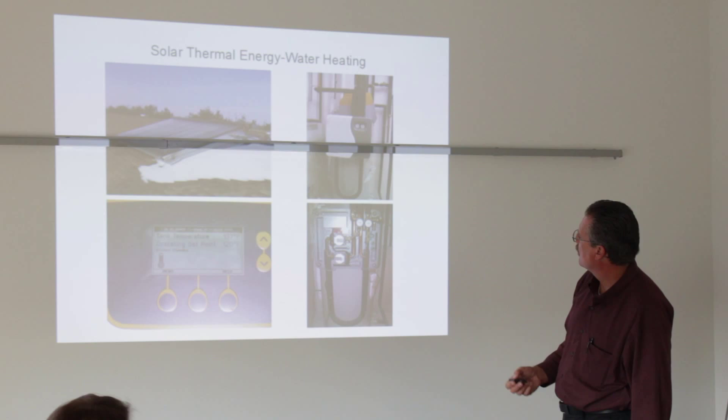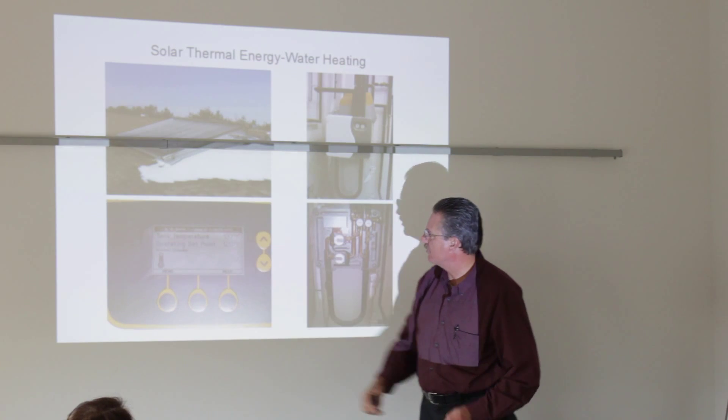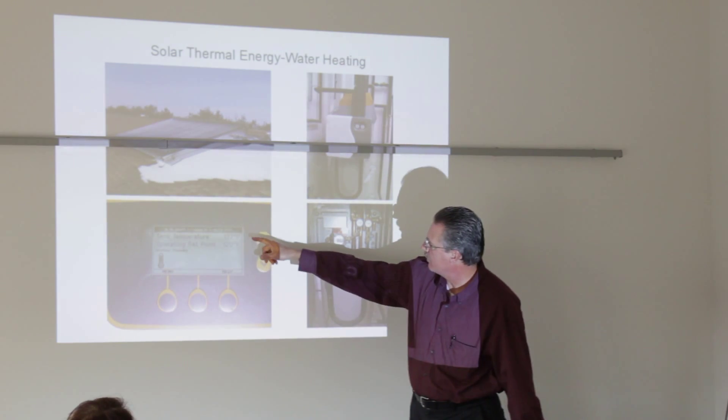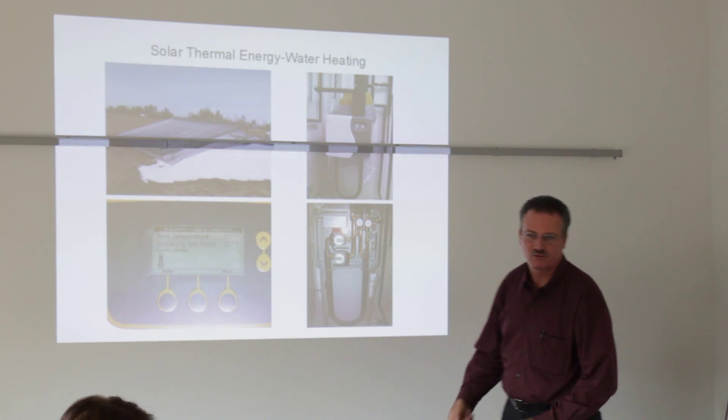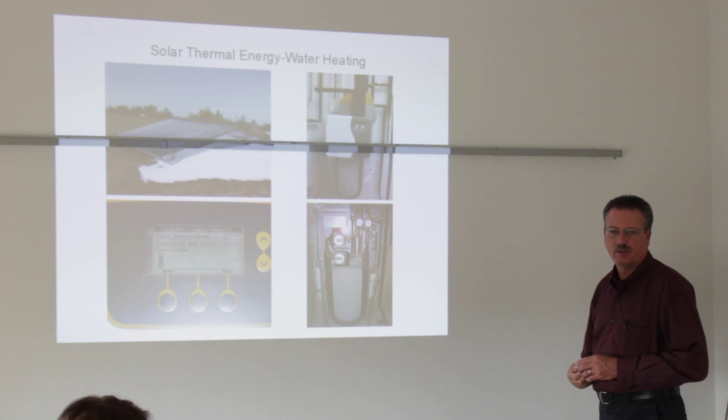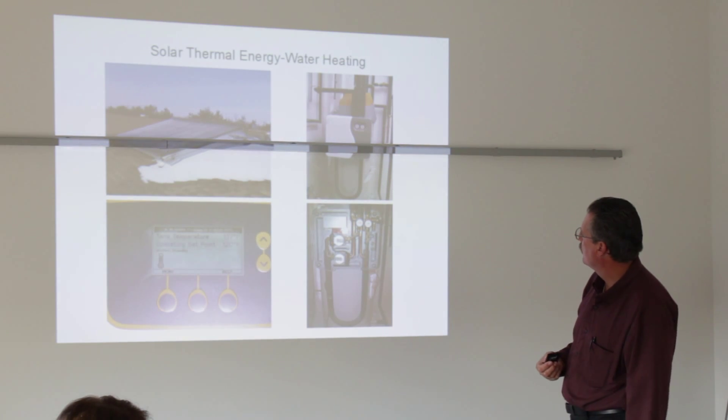And this is just an example of a unit that we did down in Shelbyville. I wanted you to see the snow and the frost on the collectors. And then notice what the tank temperature is, 137 degrees. The set point on the tank is 120, so we're already 17 degrees above set point. So there's quite a bit of excess heat there, which can be drawn off during the day.